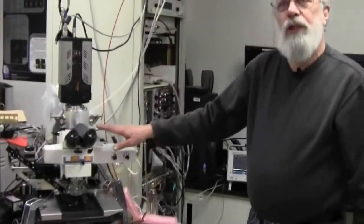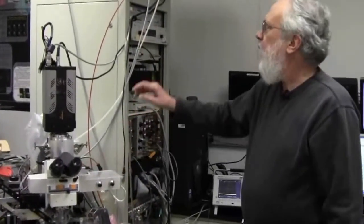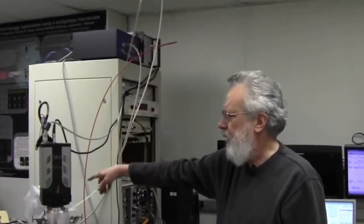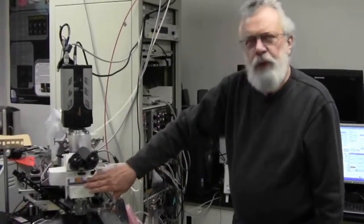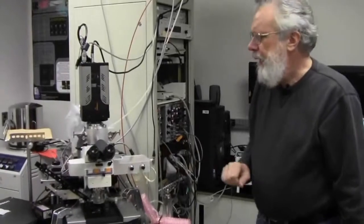The microscope is an epifluorescence microscope. We have a lamp with a fiber optic guide to bring the light into the microscope. We have a choice of cubes depending on what fluorochrome we're looking at.